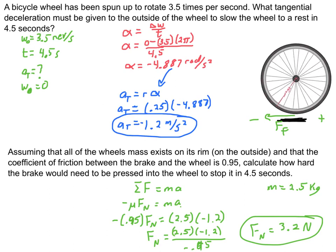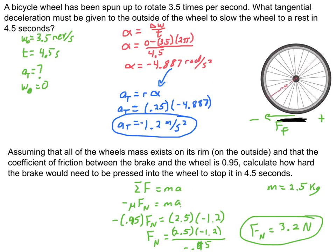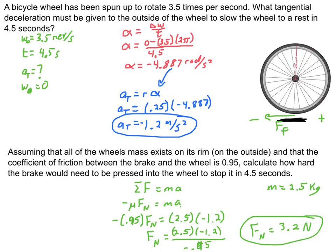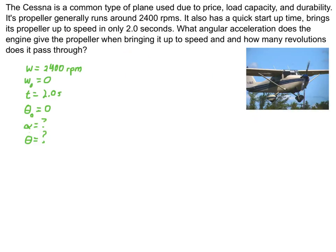This only works if all the mass exists on the outside of the wheel. If it's distributed inward - for example a solid wheel - the ball game completely changes. One last problem: a Cessna propeller generally runs around 2,400 RPM. One reason the Cessna is popular is how quickly it can start up. We'll say it gets all the way up to speed in just two seconds, which feels about right given the Cessna's quick startup capability.